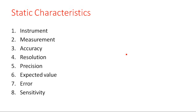Coming to static characteristics, there are eight different parameters we are going to cover here, with specific definitions for each. These are: instrument, measurement, accuracy, resolution, precision, expected value, error, and sensitivity.